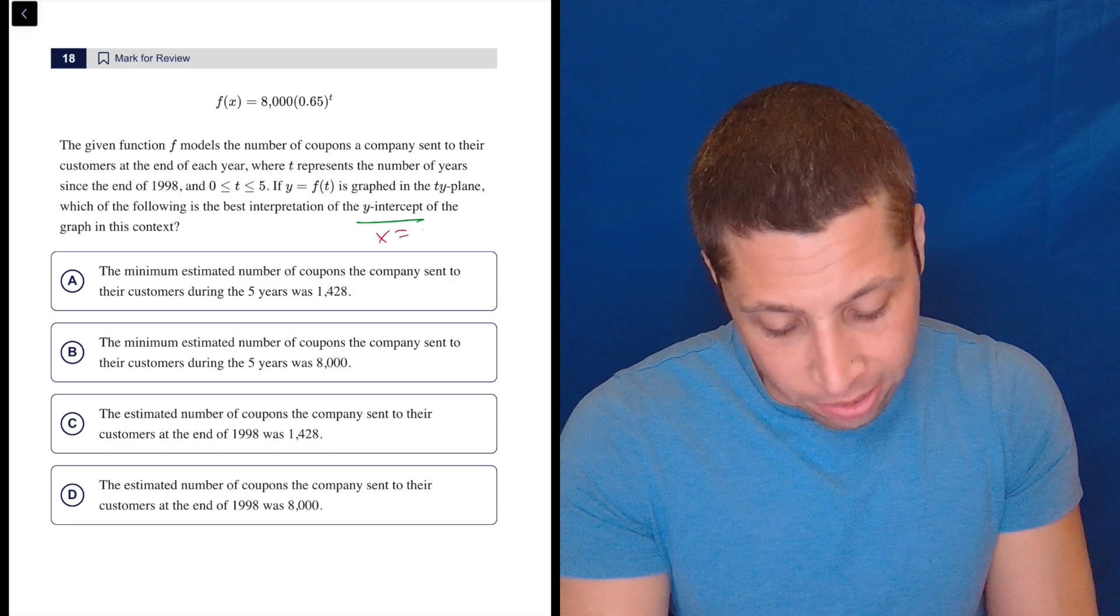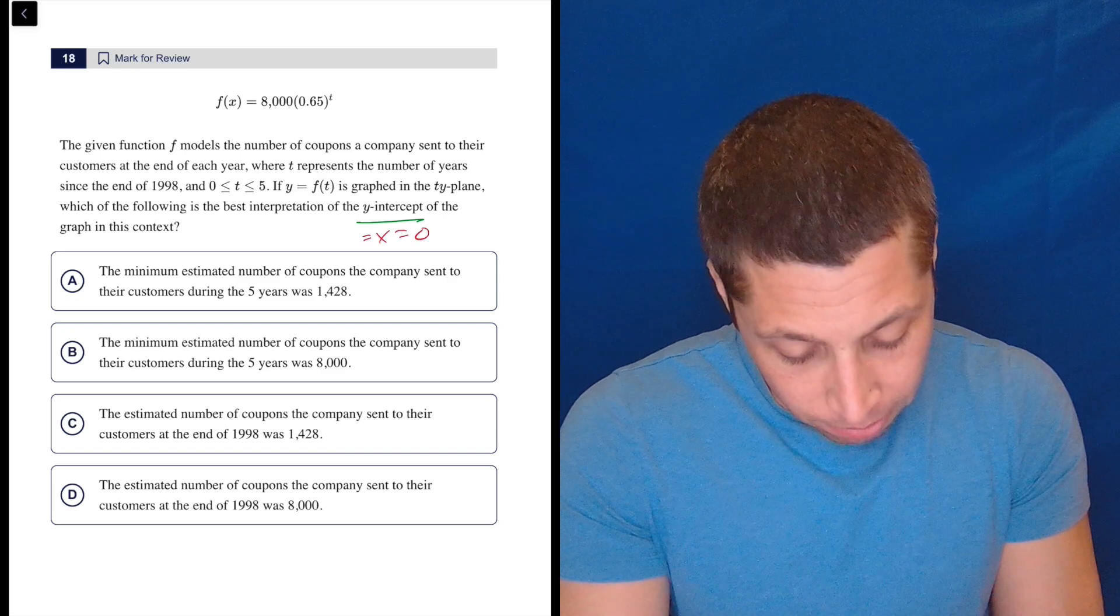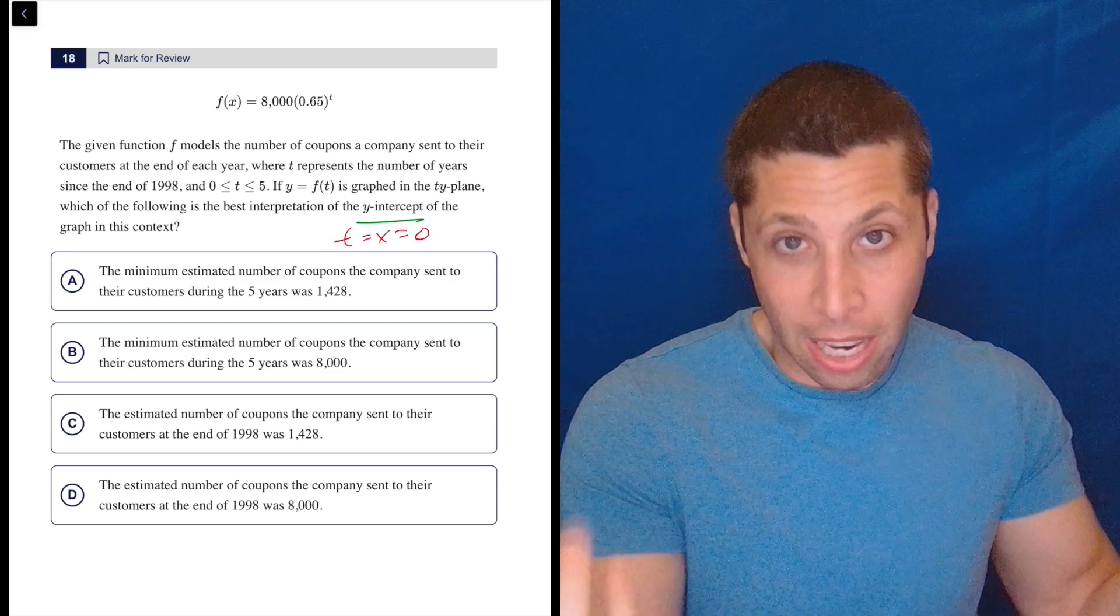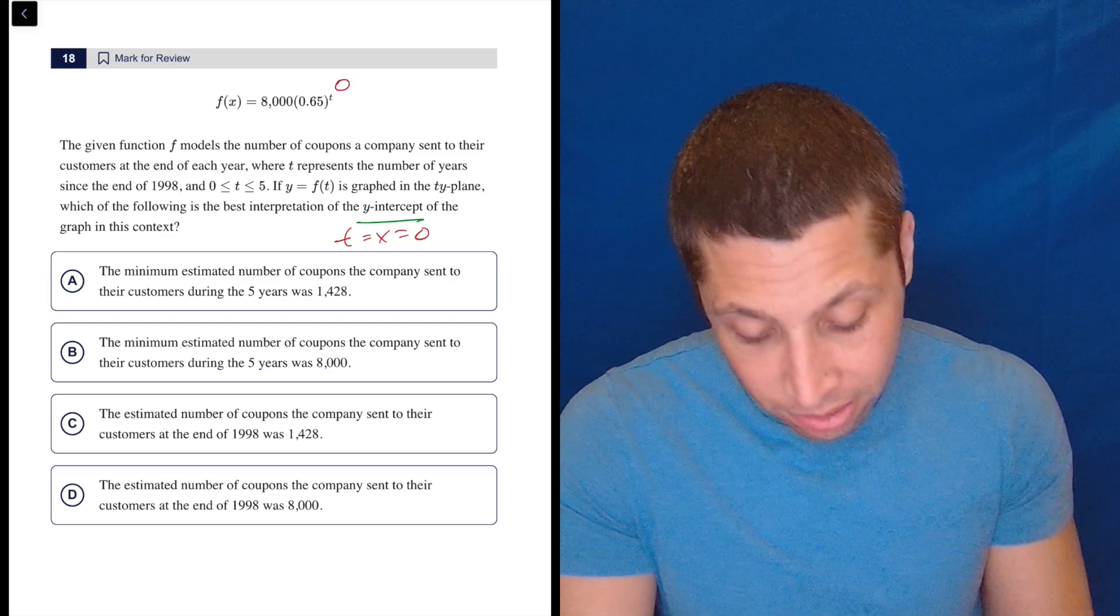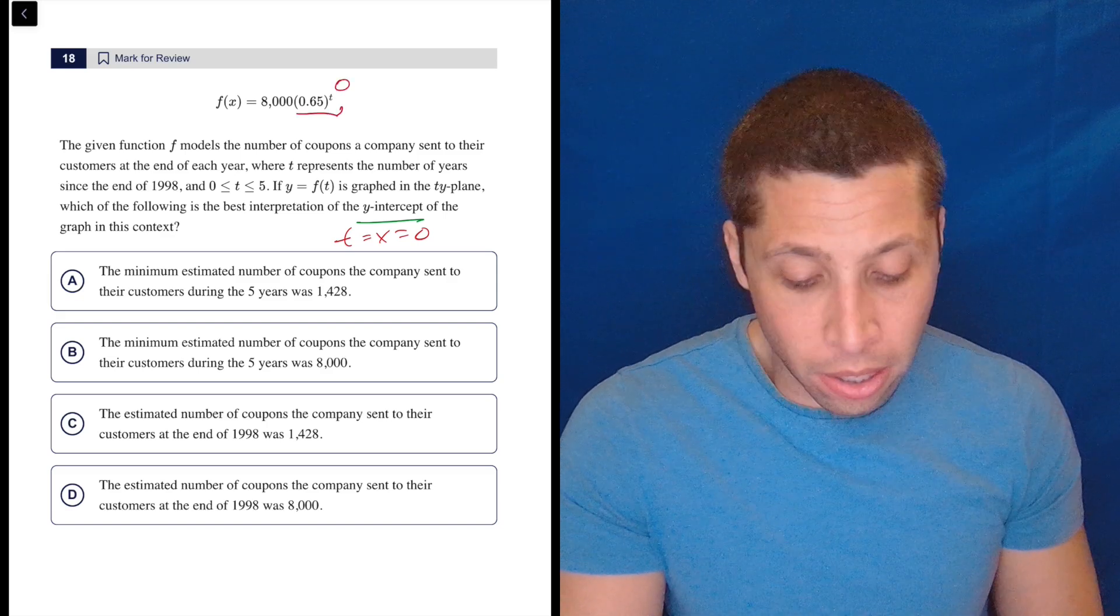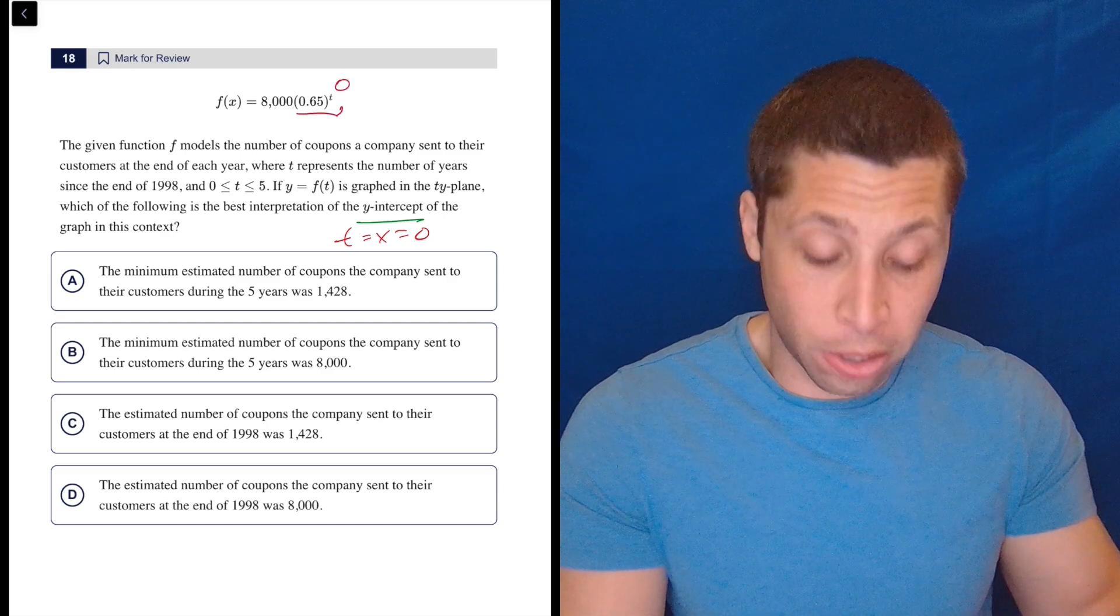Well, the first thing I know about y-intercepts is x is zero. So in this case, t is zero because it's t, but same principle. So what happens when t is zero? Well, this piece here would reduce to one. Everything raised to the zero power is one.